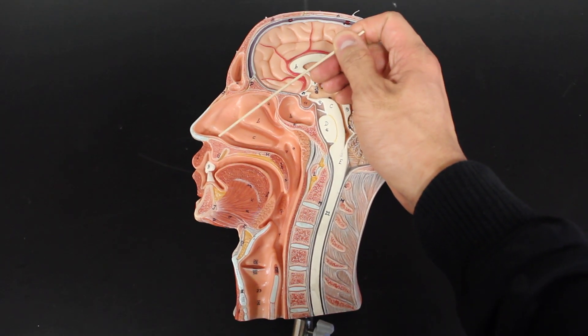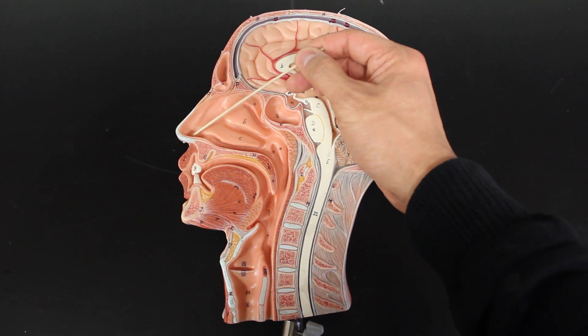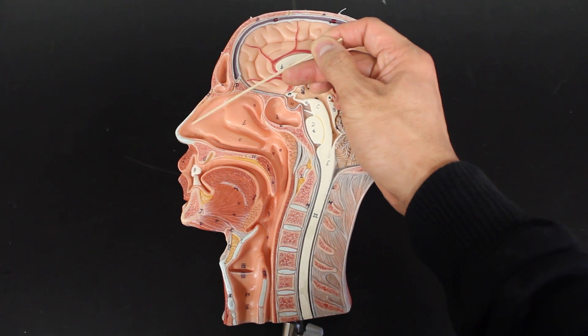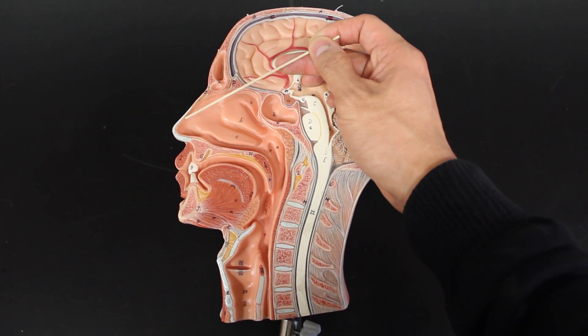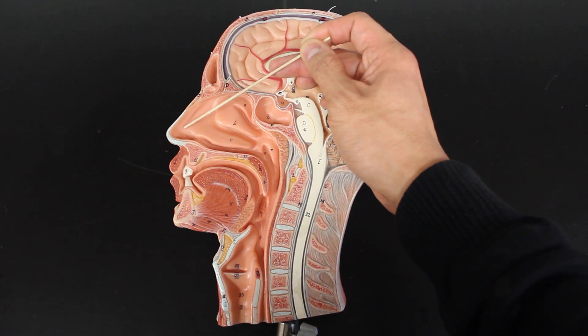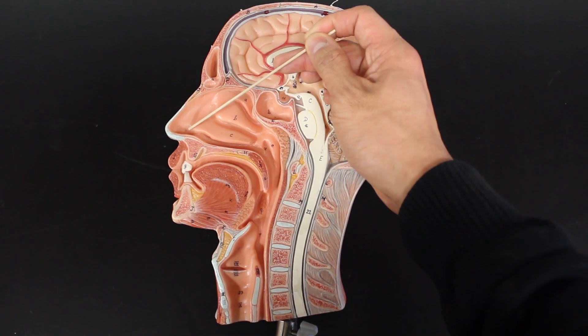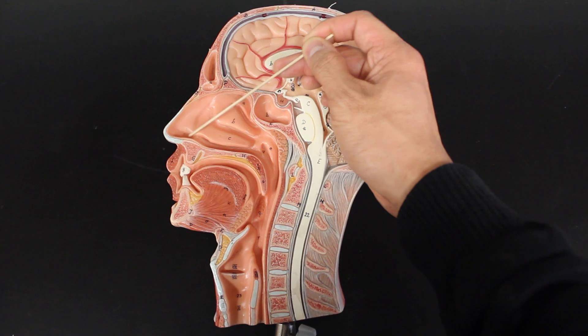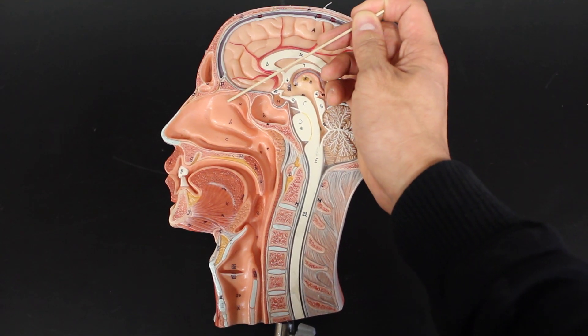If air comes in through the external nares, through this nose, it will also then go into what we call the vestibule. The vestibule is a place where you can kind of stick your finger in. But beyond that, once you try to push beyond the vestibule, you get into the nasal cavity.